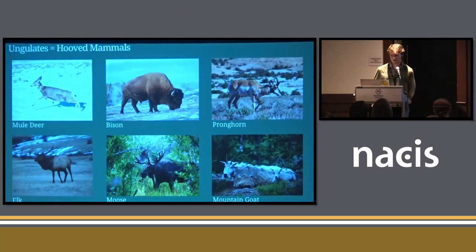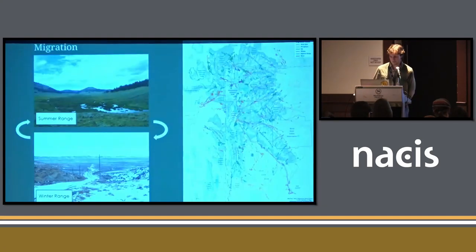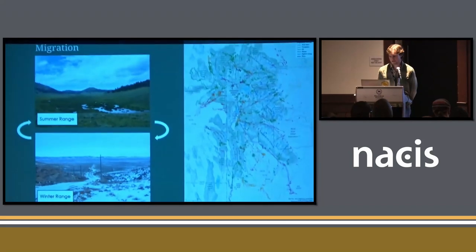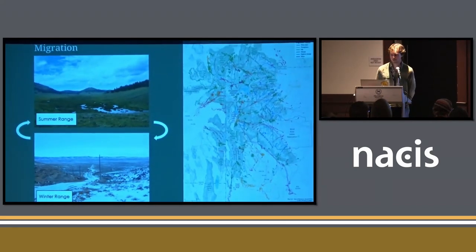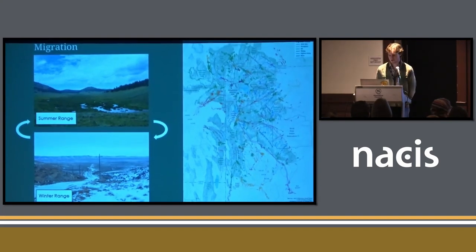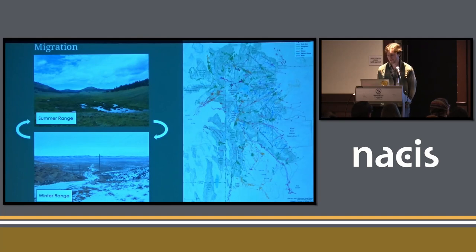Before discussing maps, we need to make sure we understand what an ungulate is and why migration is so important. An ungulate is a hooved mammal. While not all ungulates migrate, many of them do. In the Western United States, we commonly see migration between summer range and winter range. Summer is important for more nutritious forage at higher elevations, and during winter they travel to lower elevations to survive the harsher conditions.